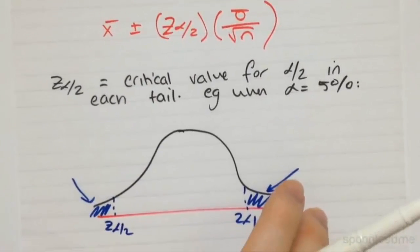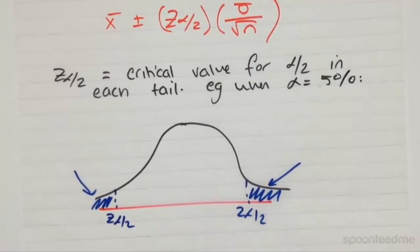And I've just drawn another representation of that, just to affirm again what we mean by the critical Z value.